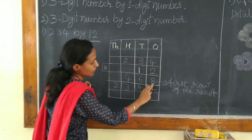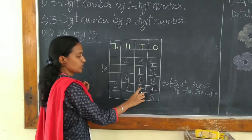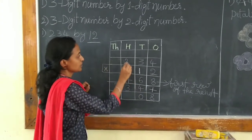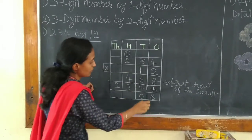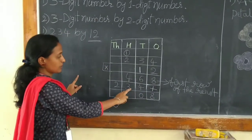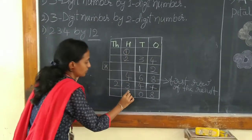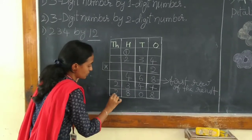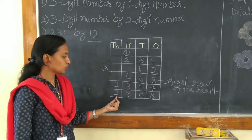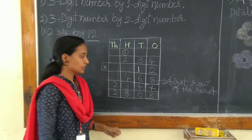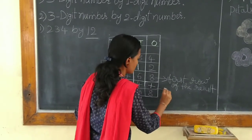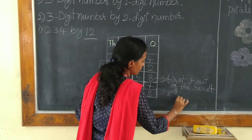Now, we have to add. 8 plus 0 is 8. 6 plus 4 is 10. 0 we have to place at the 10's place. And 1 is given carry at the 100's place. So, 4 plus 3 is 7. 7 plus 1 is 8. And 2 as it is. So when you multiply 234 by 12, you will get 2808. This is called 2nd row of the result.